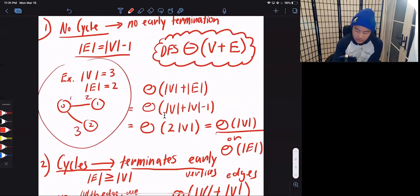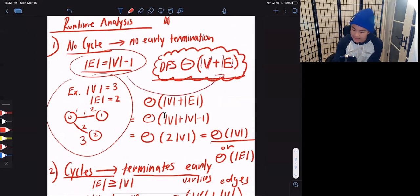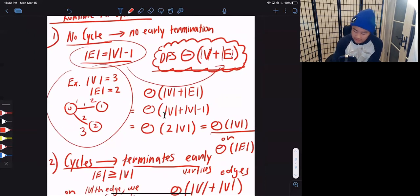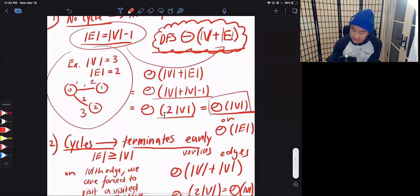And so let's look at this example. We have one, two, three vertices, and we have one, two edges. And so remember, we ran a modified version of DFS and the runtime of DFS is V plus E. And since we have this equality, we can plug in E into here, which will result in theta V plus V minus one, which simplifies into two V, which simplifies into V. And so the runtime of a no cycle case is theta V.